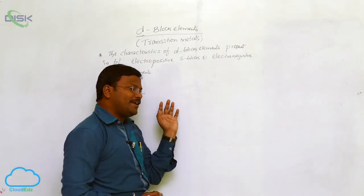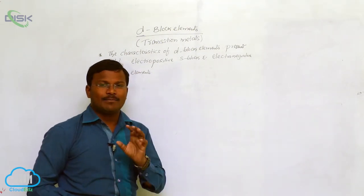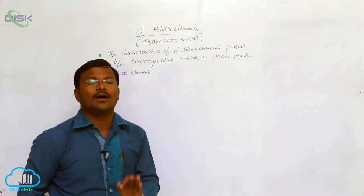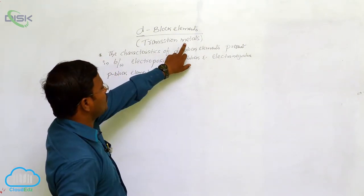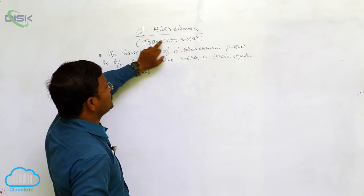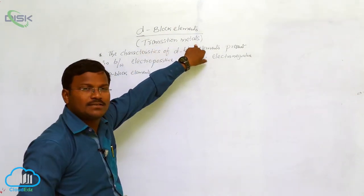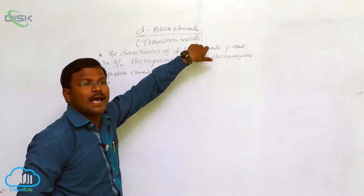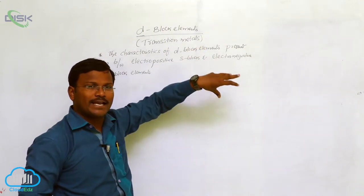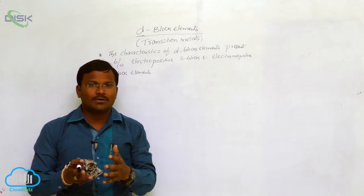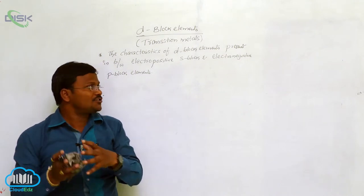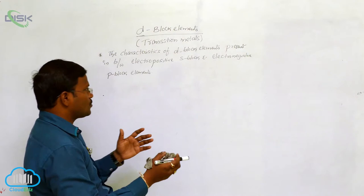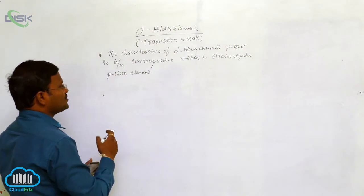All the elements belonging to D block and F block are metals, hence they are called transition metals. The characteristics of D block elements are transferred — that is, transition takes place between S block to P block. Hence it is called as transition metals.